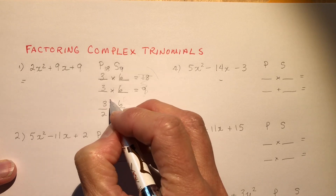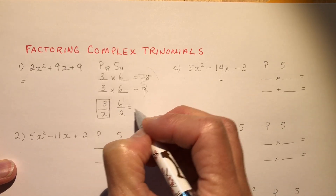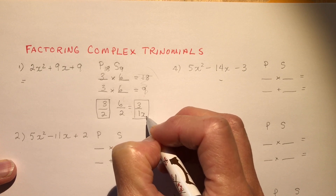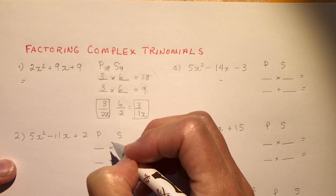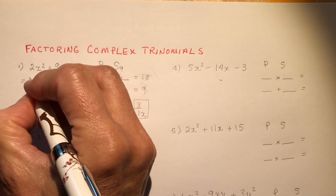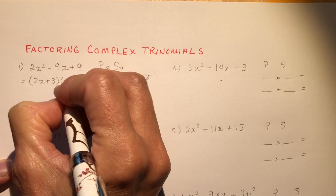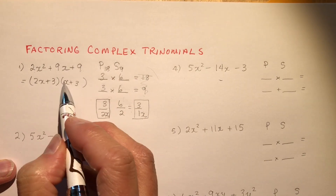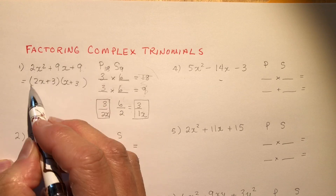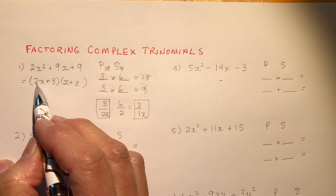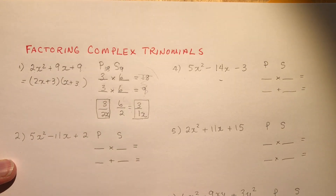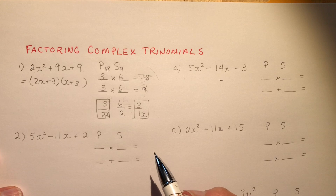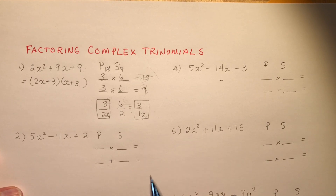Three over 2 can't be reduced, so I put a little box around it. Six over 2 is 3 over 1. The x goes on the bottom, the other on top, so we read it as (2x + 3)(x + 3). Double-check: 2x times x is 2x², 3 times 3 is 9, and we get 6x plus 3x making 9x. You can always expand to check your answer — you should never make a mistake factoring because expansion lets you verify.